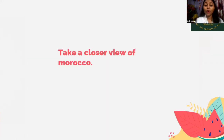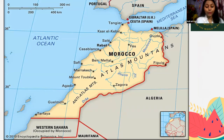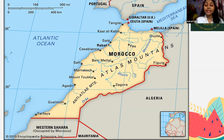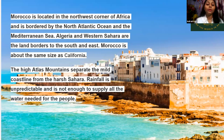Let's take a closer view of Morocco's map. Here you can see the location of Morocco in North West Africa. The Kingdom of Morocco is a Muslim country. The capital is Rabat and the largest city is Casablanca. Morocco is located in the North West corner of Africa and is bordered by the North Atlantic Ocean and the Mediterranean Sea. Algeria and Western Sahara are the land borders to the South East.